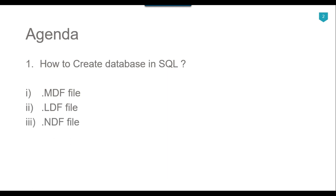Optionally we can have a third type of file called the .ndf file. Suppose in the disk where your primary file is placed you do not have enough space to store more data — you can create a .ndf file, also called a secondary data file, and the extra data will be stored inside it on another disk. So .mdf, .ndf, and .ldf are the physical aspects of a database, while tables, views, stored procedures, and functions are the logical aspects.